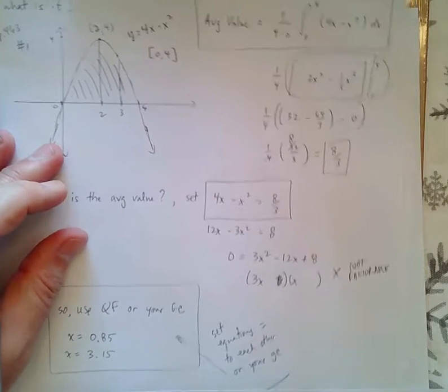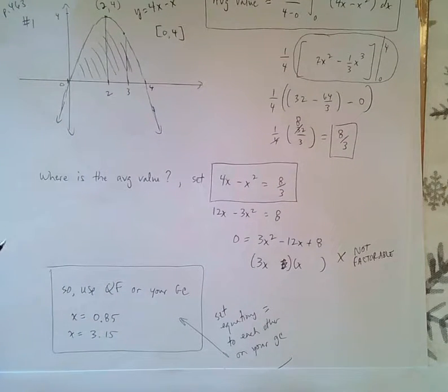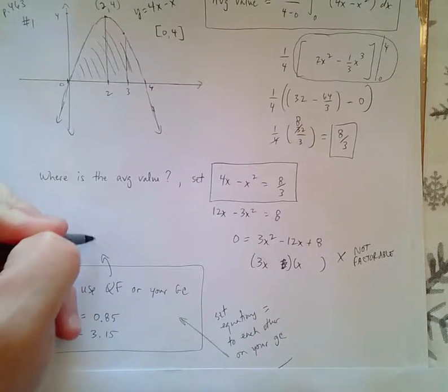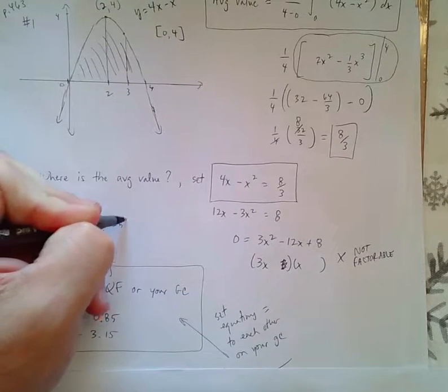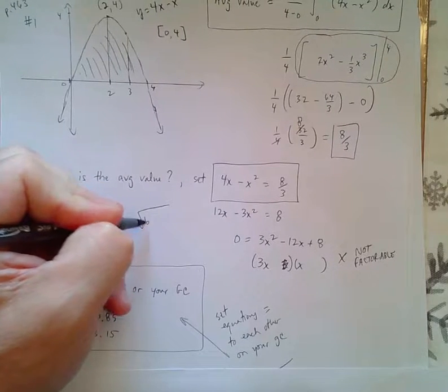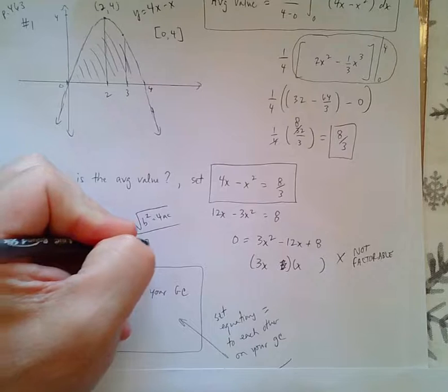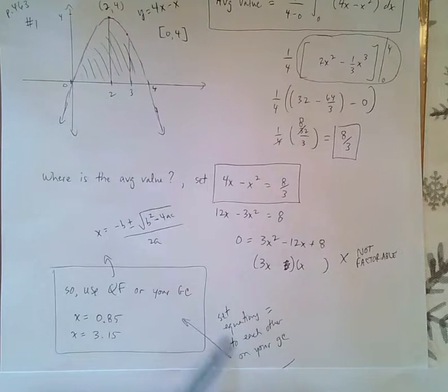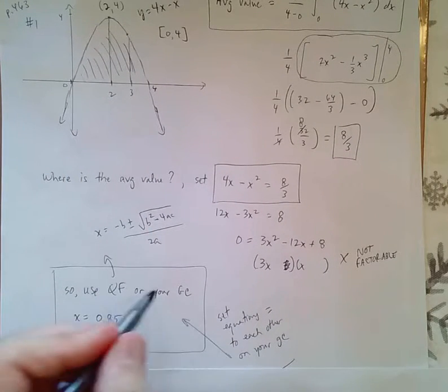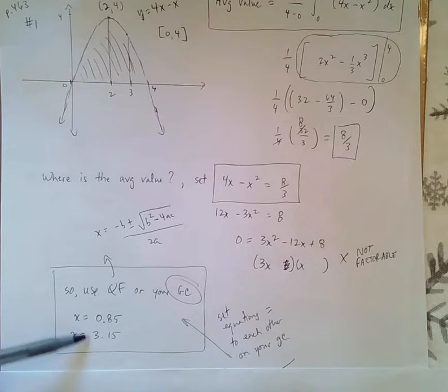What you can do is you can use the quadratic formula. The quadratic formula will give you the two answers. And you're certainly welcome to do that. But I'm certainly okay with doing it the easier way, which would be to just graph them, set them equal to each other on your calculator, and use your graphing calculator, and you'll get the two answers.